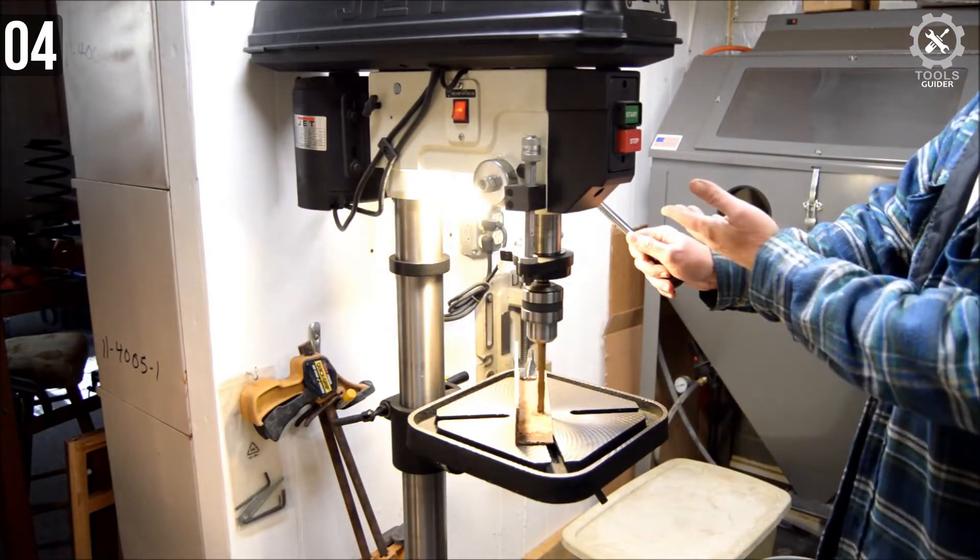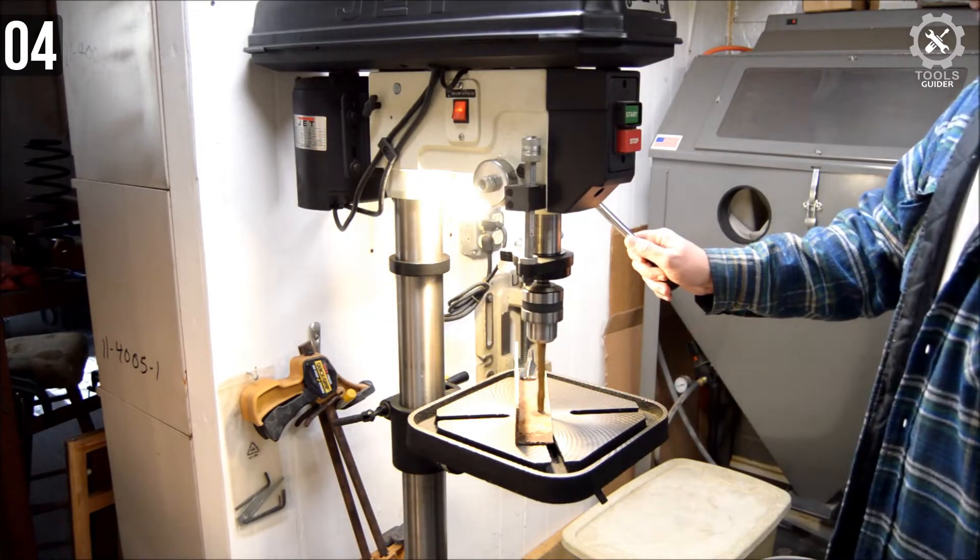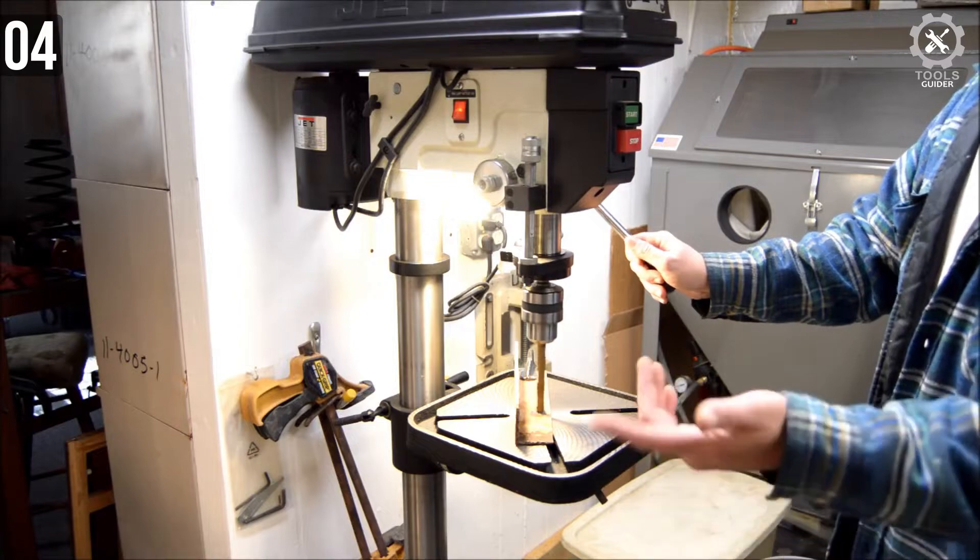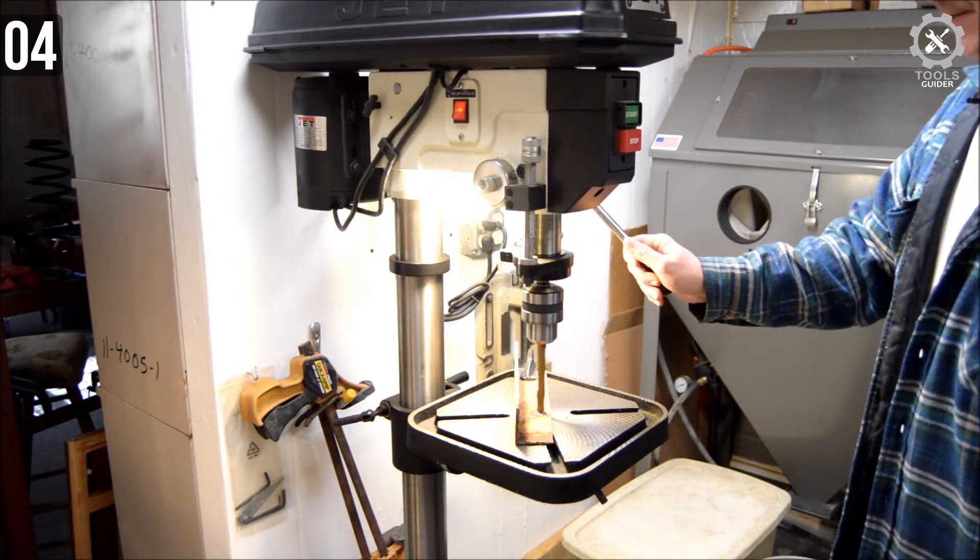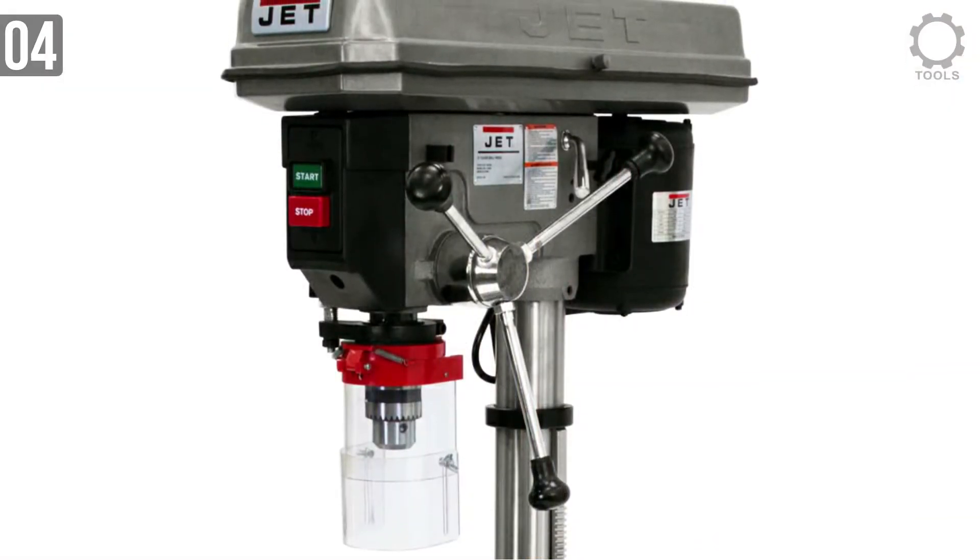The unit is powered by a 3/4 HP 9.0 amp motor which drives an adjustable belt with 16 different speed settings ranging from 200 RPM to impressive 3630 RPM. All in all, the JTJ 2500 is one of the most reliable machines that the company has ever released.